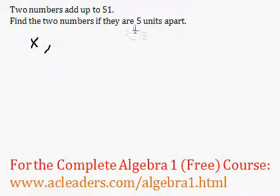And now we know that the two numbers are five units apart. So if the first number is x, the second one can be x minus 5.